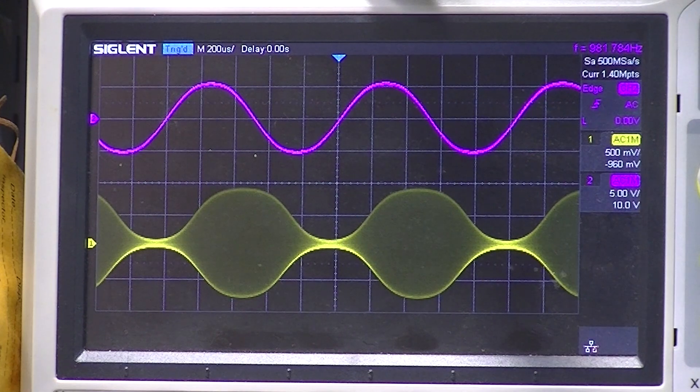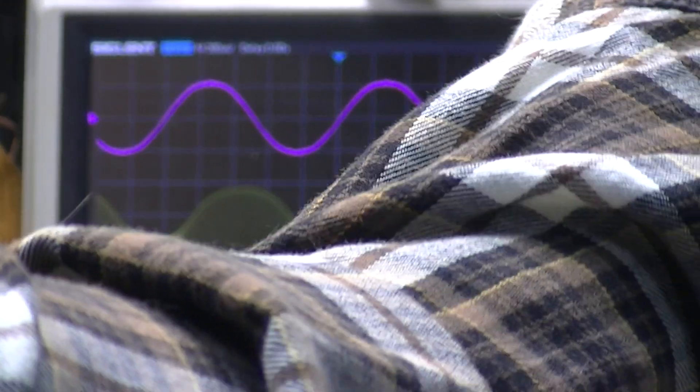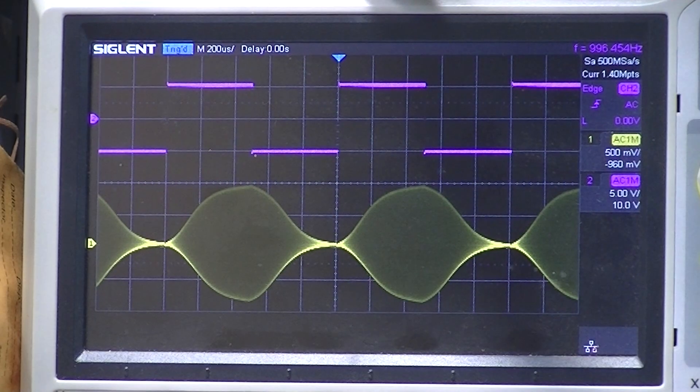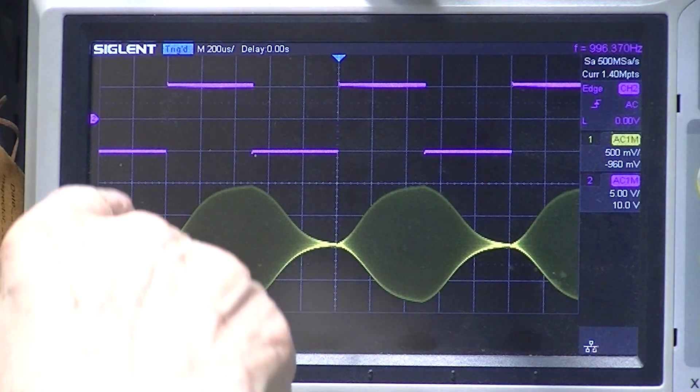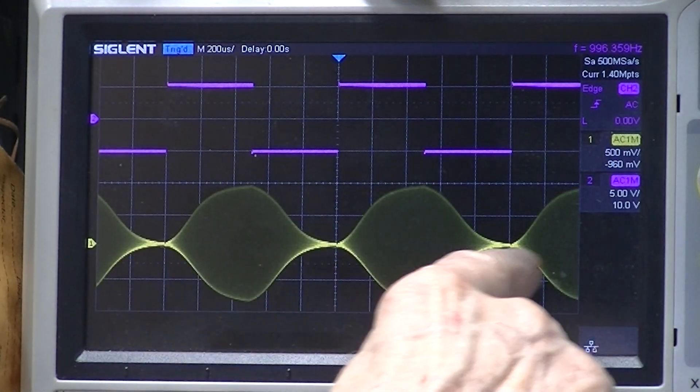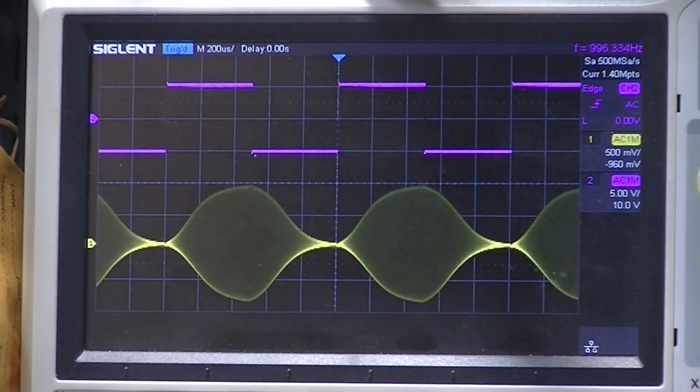Let me change the signal generator to a square wave. So we're modulating with this and it looks like we're getting a sort of distorted sine wave.